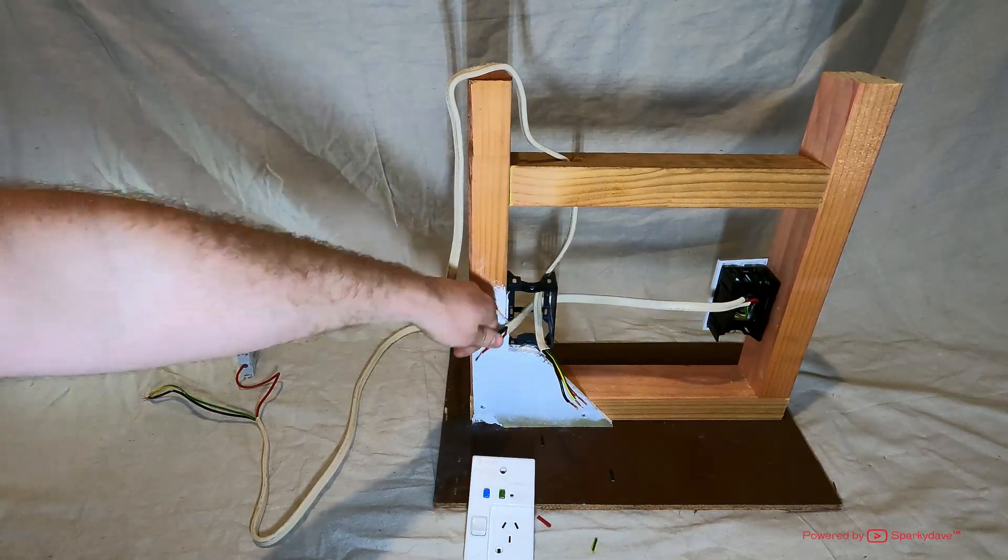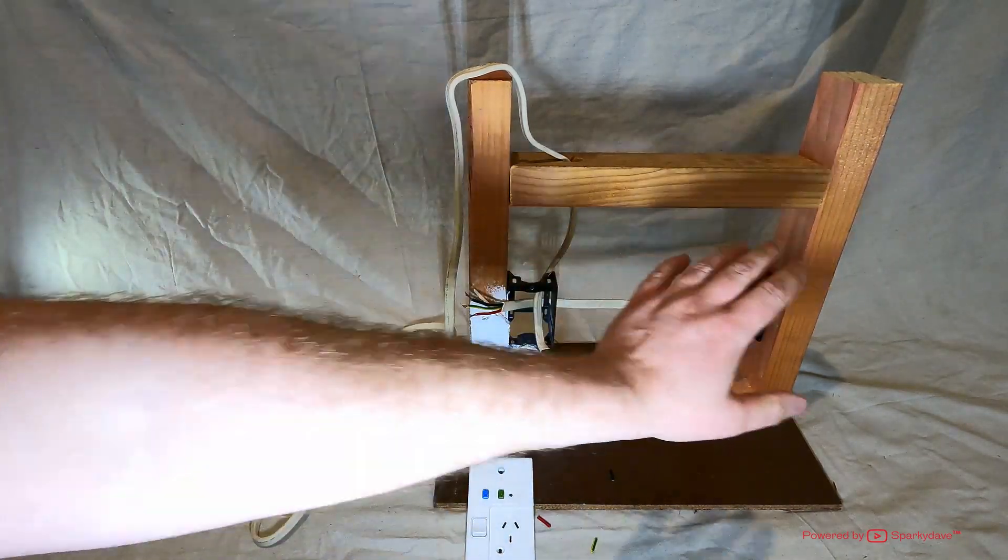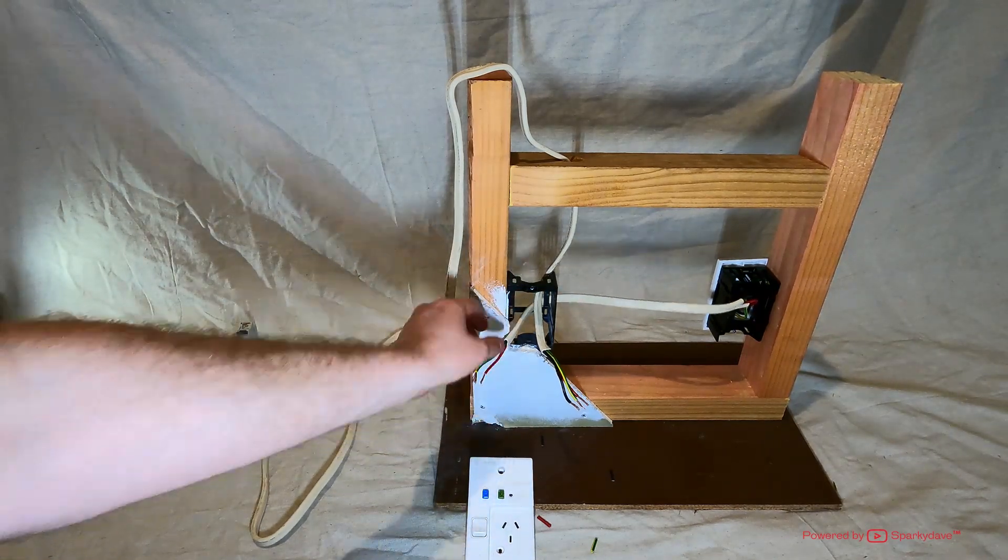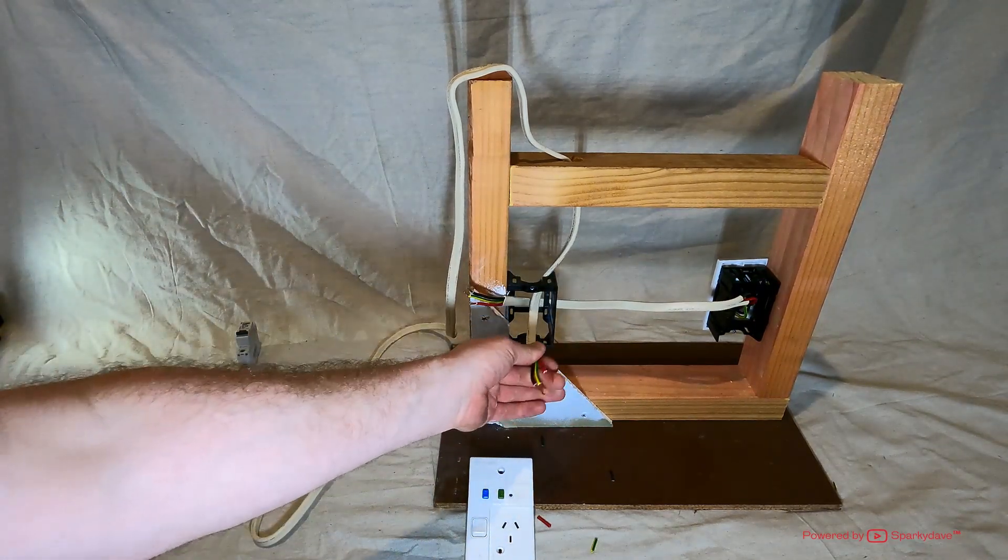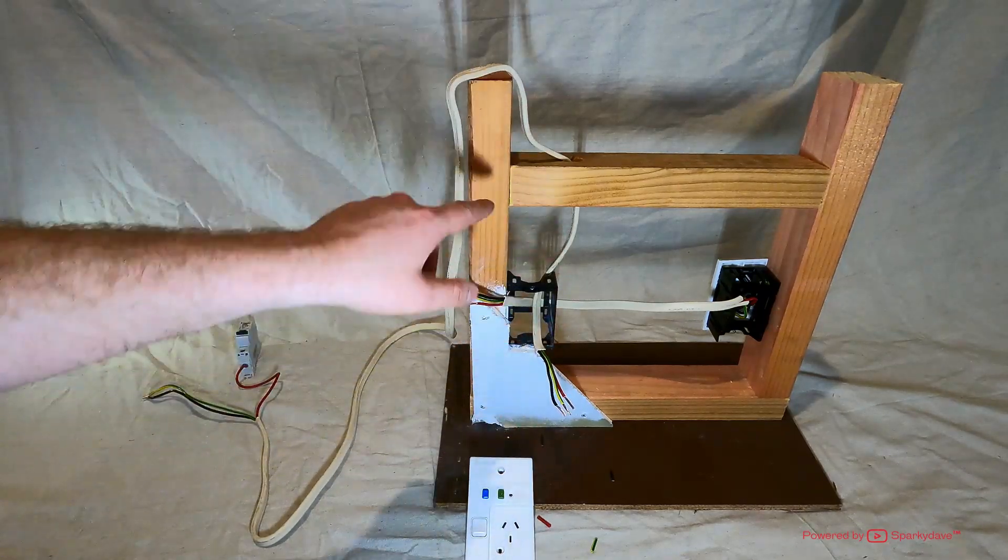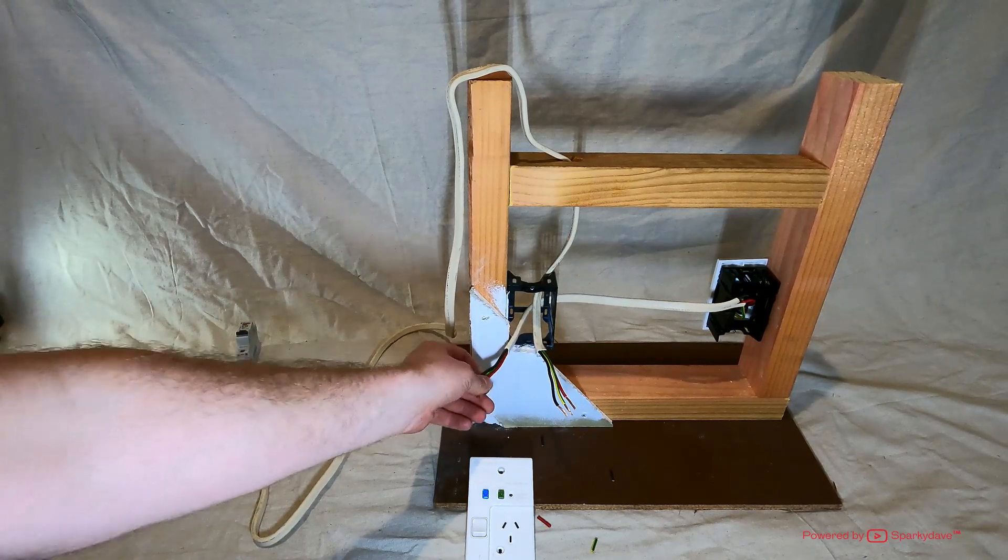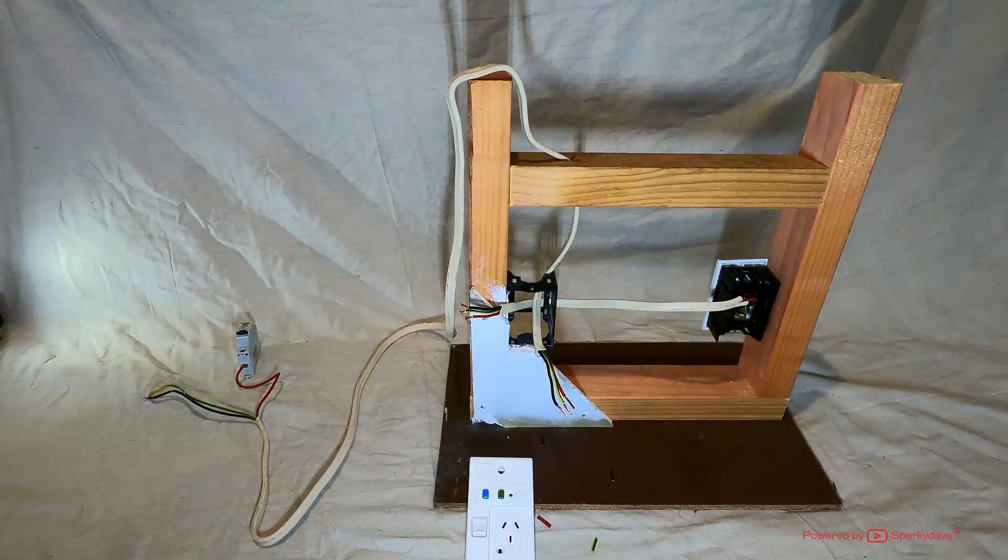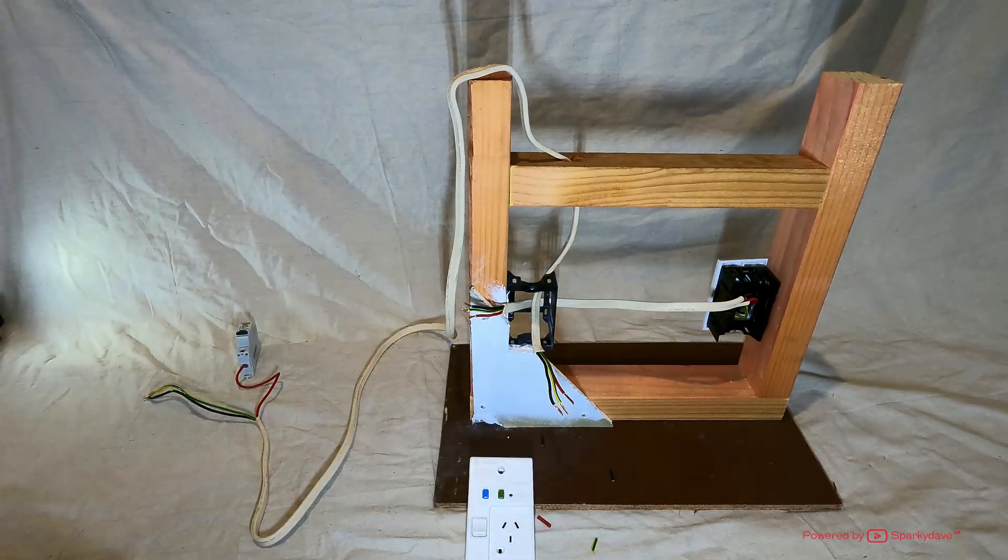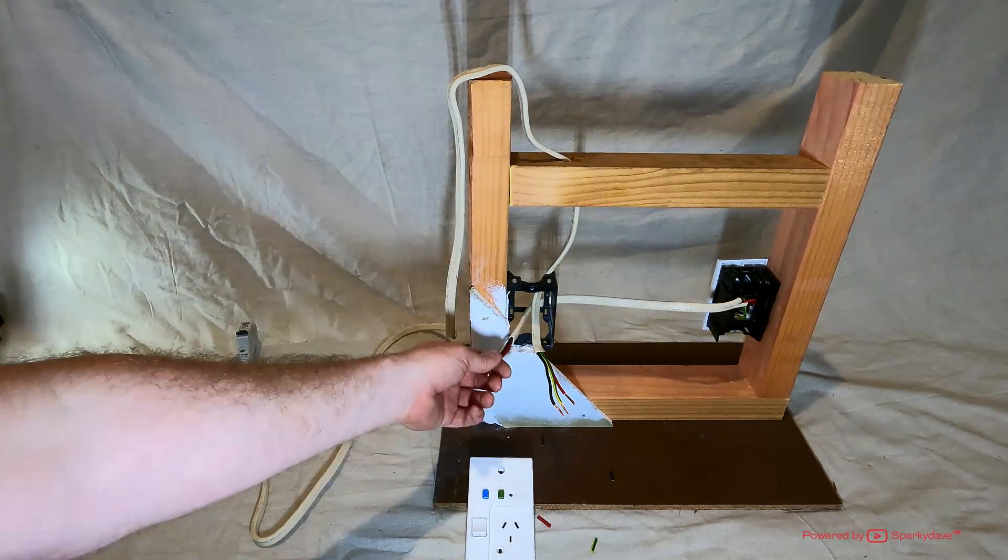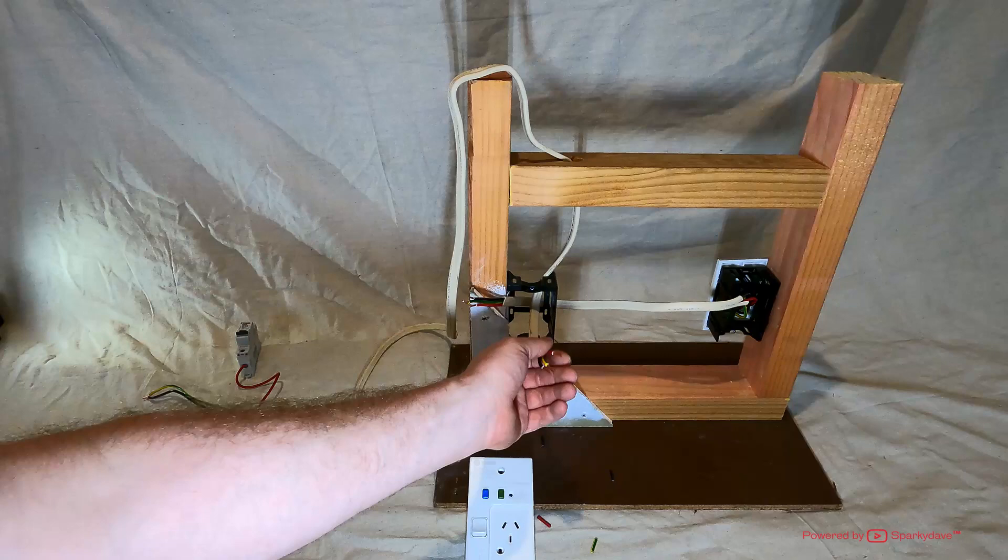Now, because we would be installing the socket at the same time, we would probably already know what side the line connection comes from. The line is the side that comes off the switchboard, and the load connection is the connection that goes to the next socket away from the switchboard. We would already probably be able to establish what end is the load cable and what end is the line.